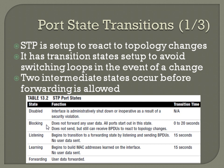Between blocking and forwarding you have the listening and learning states. When we talk about rapid spanning tree, these are considered the Achilles' heel in the speed of STP. Before you can forward frames you have two 15-second transitions. In the listening state, it begins transitioning to forwarding by listening and sending BPDUs but no other data is sent. In the learning state it starts to build its MAC address table from directly connected interfaces, but still no user data is sent.